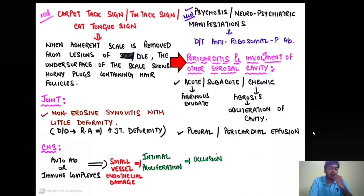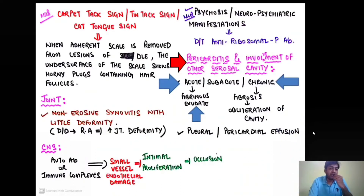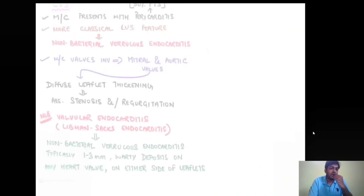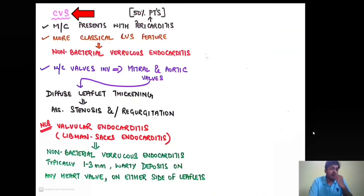SLE also involves the serosal cavities — the pleural, pericardial, and peritoneal cavities. In acute conditions, there is a fibrinous exudate, whereas in chronic conditions there is fibrosis and possible obliteration of the cavity. Pleural or pericardial effusion can also occur.